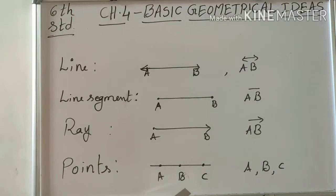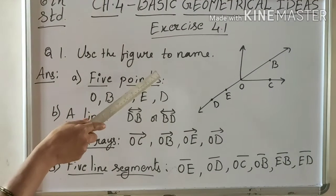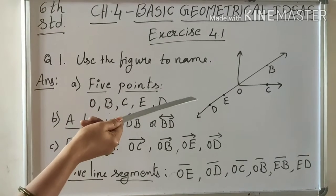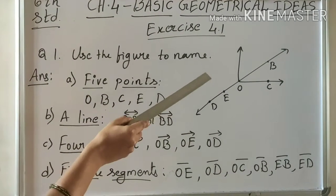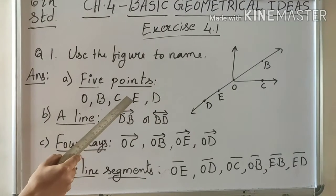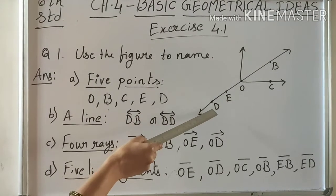Exercise 4.1, question number one: Use the figure to name five points. Here is a figure given. We need to mention any five points in this figure. What are they? B, C, O, E, and D.